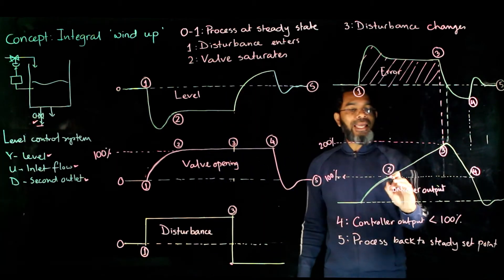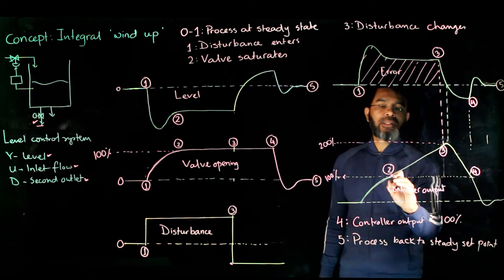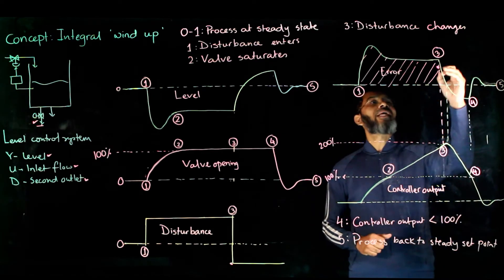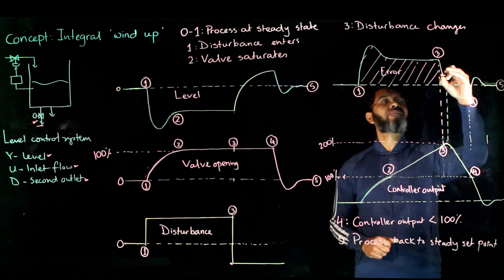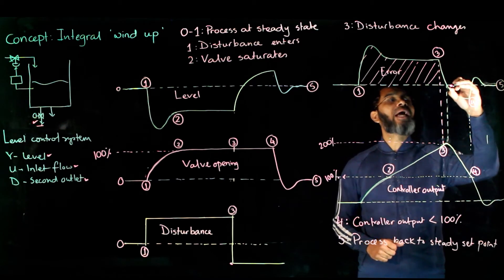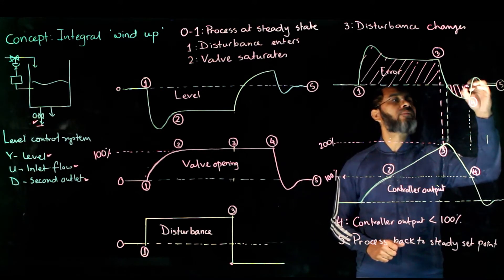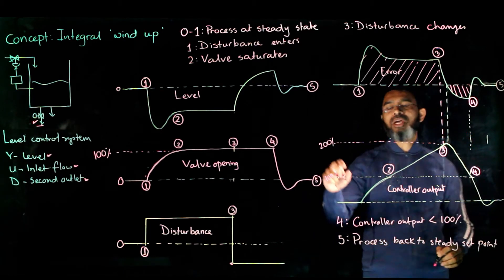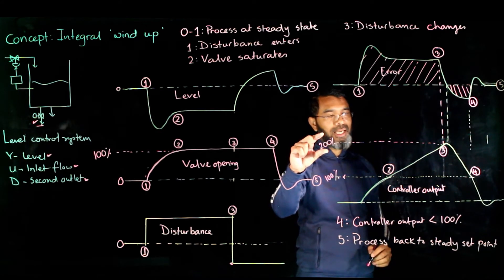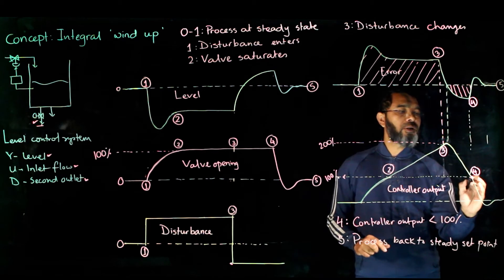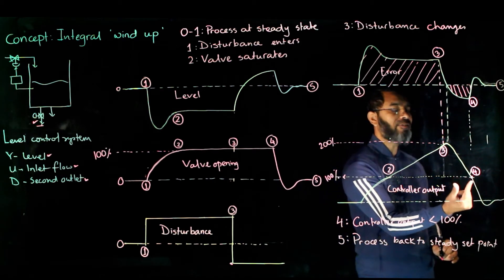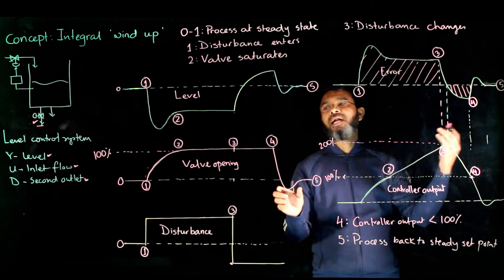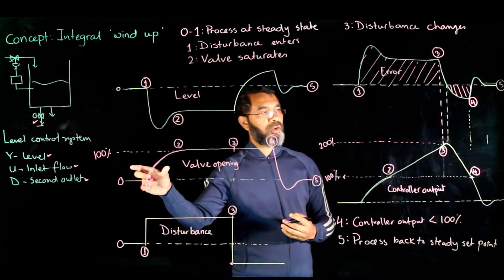Simply because, due to the integral action, the controller is calculating that the valve opening should be 200%. The error is now decreasing and becomes negative, but only when there is sufficient negative area does the control action start to change. Because the calculation was at 200%, it is not until the value comes back down to 100% that the controller output actually begins to decrease below 100%.